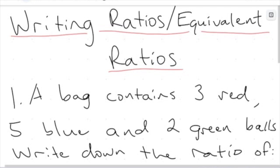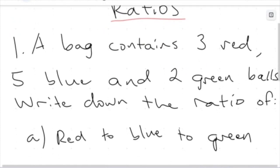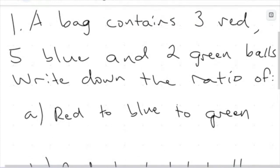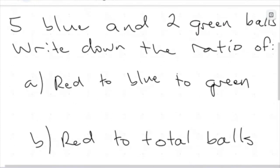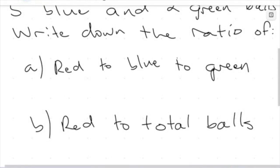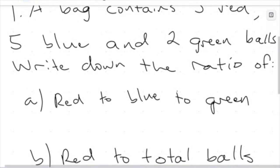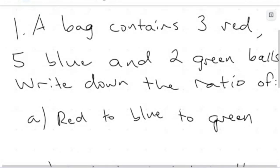Let's jump straight into a question. For question one, a bag contains three red, five blue, and two green balls. We want to write down the ratio of red to blue to green, as well as red to the total number of balls in the bag. In the early stages of ratios, it's really just an act of counting and writing this stuff as a ratio.